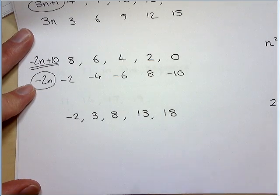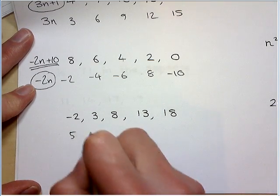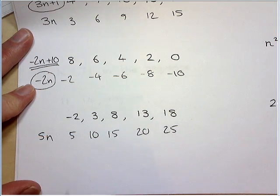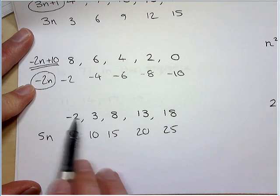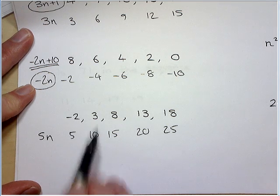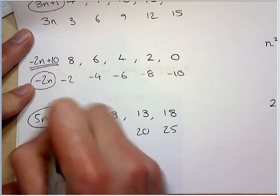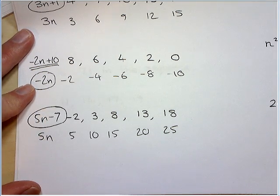This one you can see it's going up in 5 so it's related to the 5 times table. We say that is 5n. And you should be able to see this isn't the 5 times table, it's 5 times table take away 7. So that's how easy it is to find nth terms. You can do it in your head very quickly.